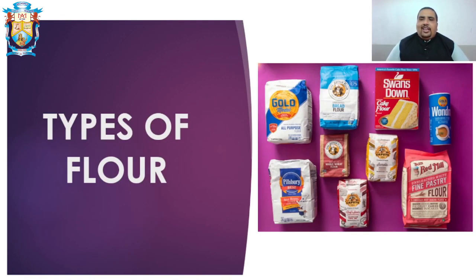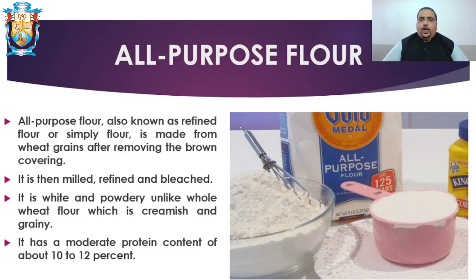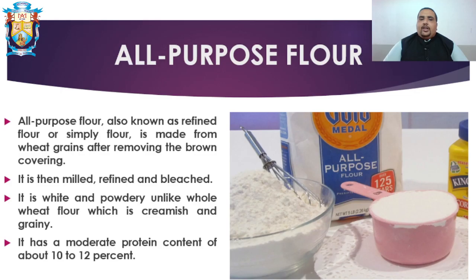Now we will see the different types of flour available in the market for commercial as well as home use. The first is all-purpose flour, also known as refined flour. It is made from wheat grains after removing the brown covering, then milled, refined, and bleached. It is white and powdery, unlike whole wheat flour which is creamish and grainy. It has a moderate protein content of about 10 to 12 percent.